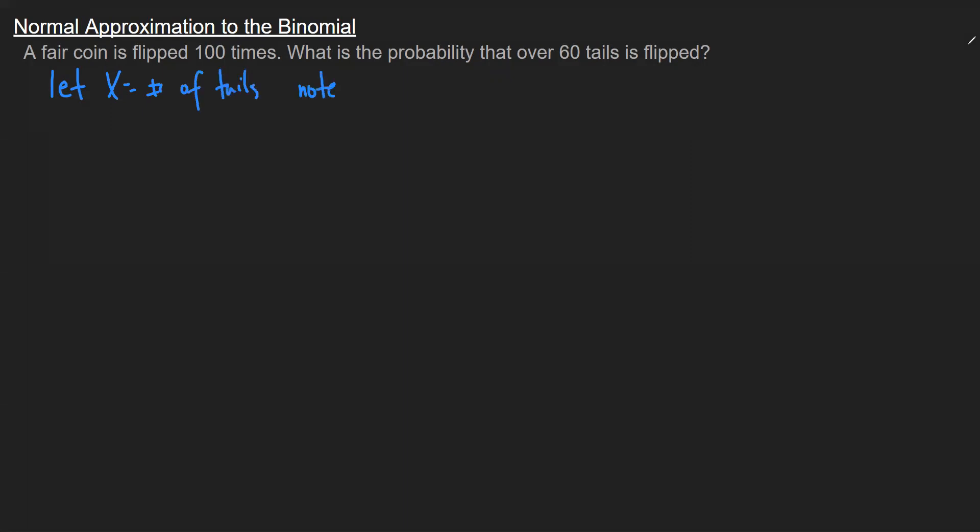What I will note is that because of the description of the experiment, this is a binomial distribution, where my number of trials n is how many times I'm flipping it. And my probability of success p, the success is the outcome you're interested in observing, in this case tails, is 0.5.